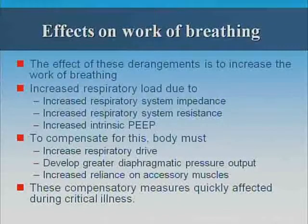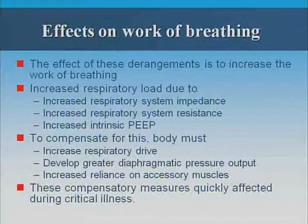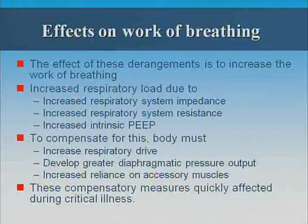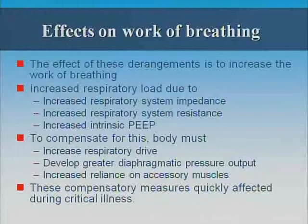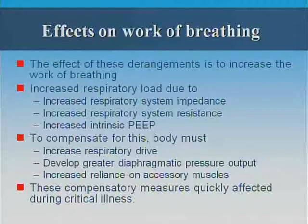The whole respiratory system has an increase in impedance, resistance, and intrinsic PEEP. To compensate, the body has to increase respiratory drive, develop greater diaphragmatic pressure output, and there's an increased reliance on accessory muscles. These compensatory mechanisms are quickly overridden in critical illness, which is one of the reasons why these patients fail so quickly when they become critically ill.